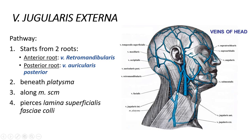The vein crosses the muscle and reaches the posterior margin of it, then goes under the platysma and reaches approximately the level of the clavicle bone, where it disappears. The vein then pierces the lamina superficialis fasciae colli, going deeper.